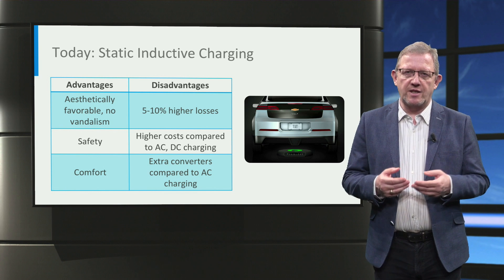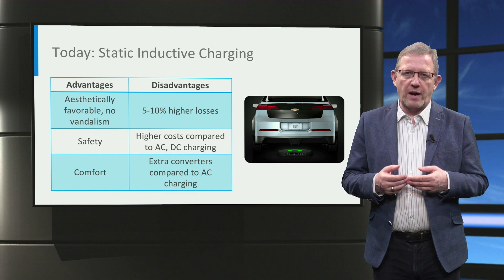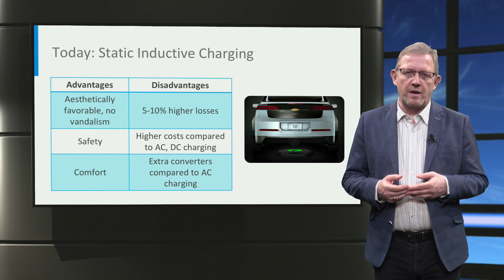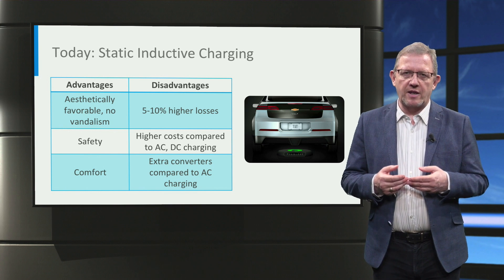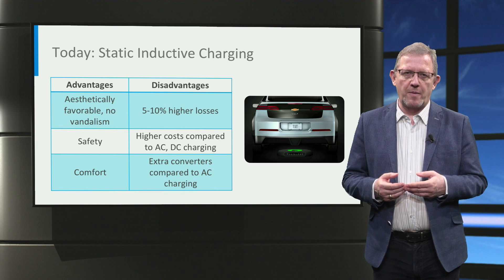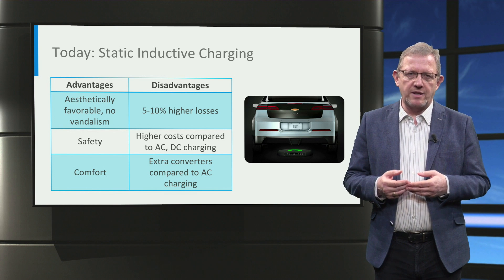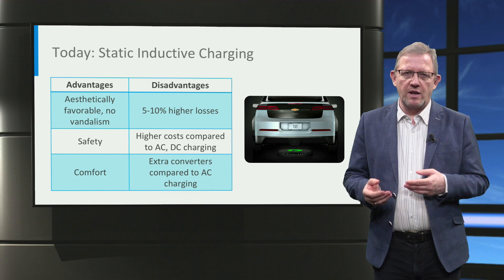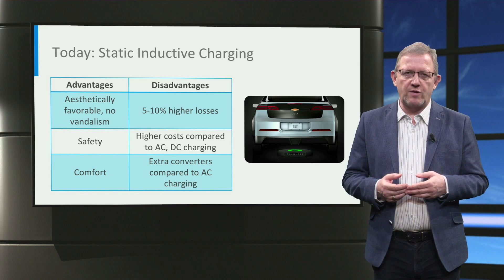Wireless charging systems for electric vehicles are already commercially available today and this is only expected to increase in the future. The main disadvantage of IPT systems is the higher losses in the system. The cost of the system is relatively higher as well, due to the additional converters and two charging pads that are needed — one on the ground and one on the vehicle. However, the power efficiency of these systems is improving and will become competitive with respect to conductive charging.